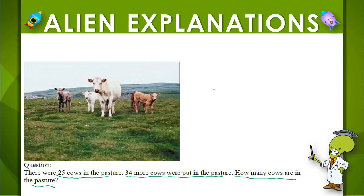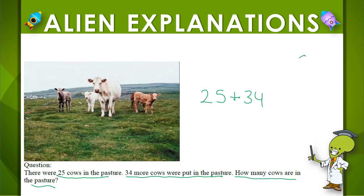So we started with 25 and then 34 more joined them — they were put together with those 25. Putting together or joining two groups together is addition. So all we need to do is add 25 and 34 together and you should come up with the correct answer.